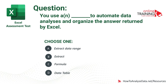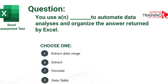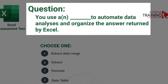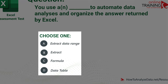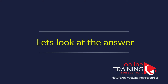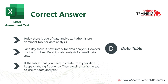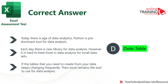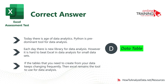You use what to automate data analysis and organize the answers returned by Excel? Choices: Extract Data Range, Extract, Formula, and Data Table. The correct answer is D, Data Table. A data table can be created from an existing data set or by importing new data into an Excel table. Despite many tools designed for data analysis, Excel still remains key for small data sets, and an Excel table is an essential part of it.